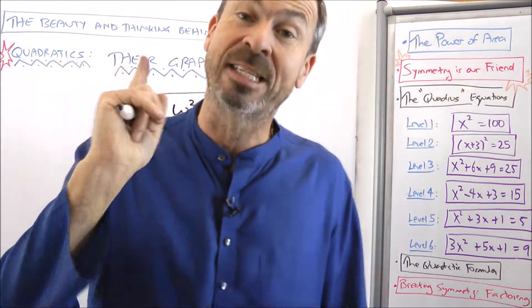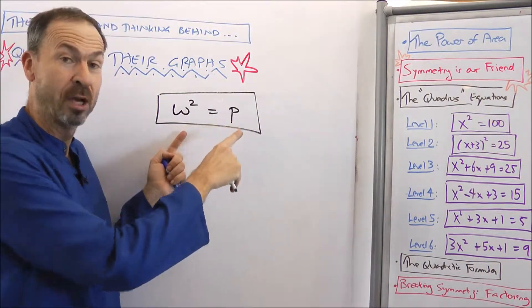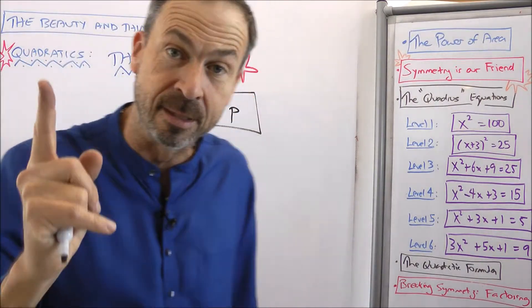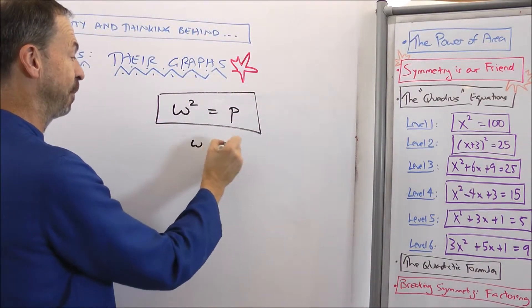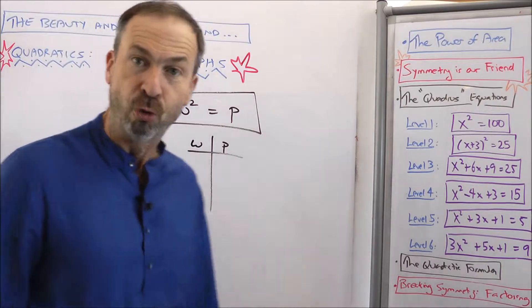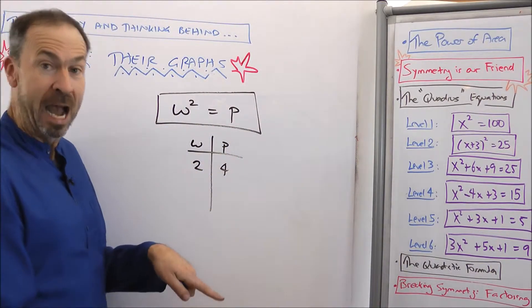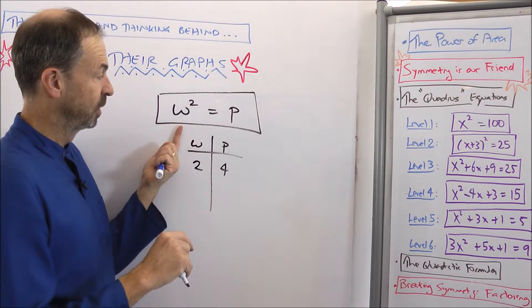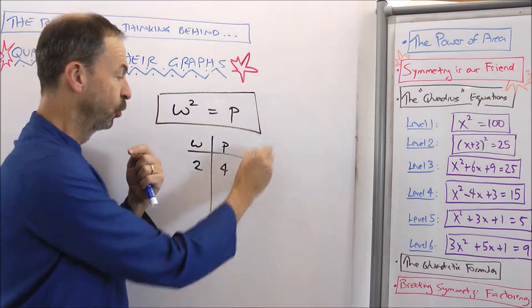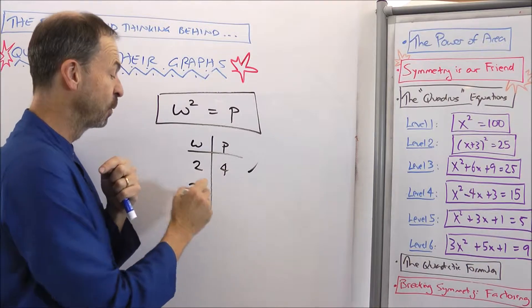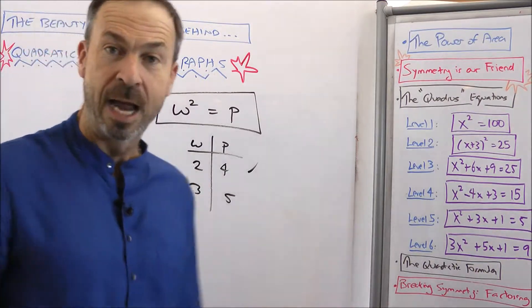Except, we can start collecting the data from this equation that makes true sentences. For example, I could make a table of all the values W and P that give true number sentences. If W was 2 and P was 4, I think I'll have a true number sentence: 2 squared equals 4, true.